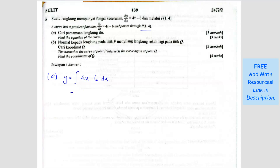So you get 4x squared over 2 minus 6x. Don't forget to plus C. So you get 2x squared minus 6x plus C.